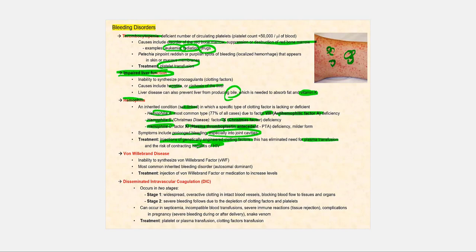The next type is von Willebrand disease. This is the most common inherited bleeding disorder. It is autosomal dominant. So someone who has von Willebrand disease is unable to produce or synthesize the von Willebrand factor. So treatment involves injection of von Willebrand factor or medication to increase its levels.